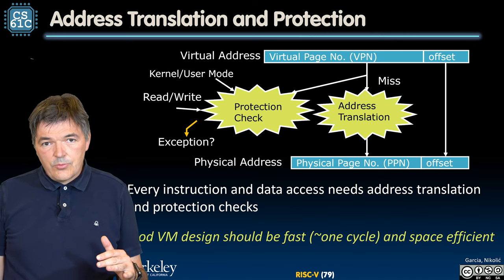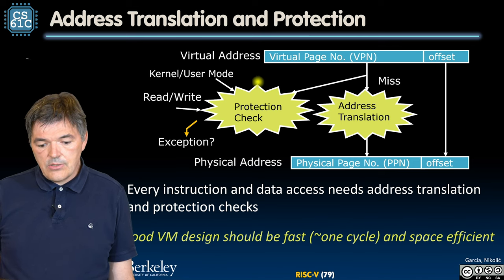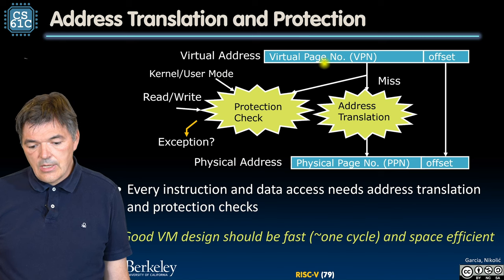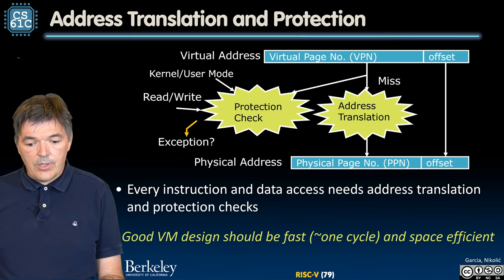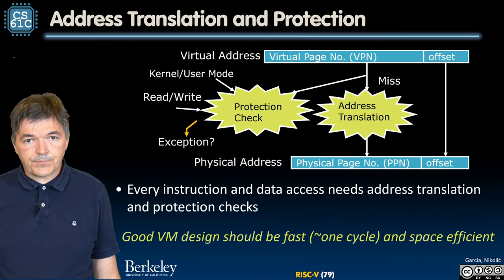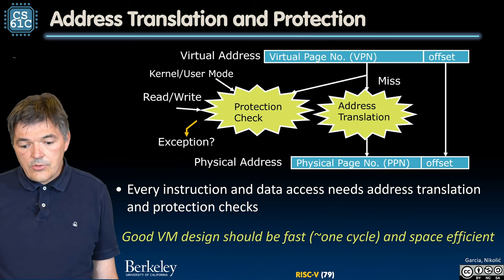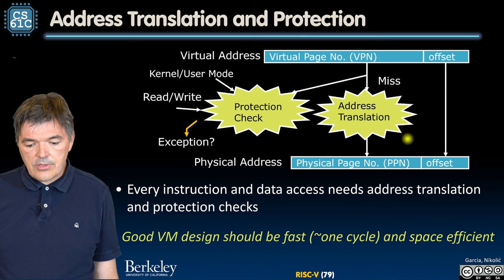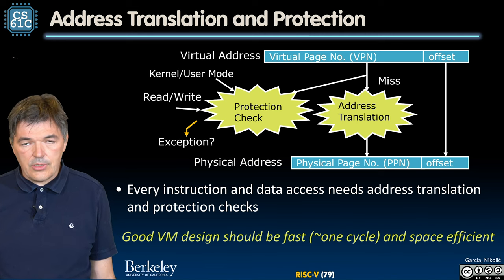First, let's recap what we would like to do. Our processor or process uses virtual addresses that consist of a virtual page number (VPN) and the offset. If you're working with four Kibi pages, the offset will be 12 bits. The virtual page number is the remaining 20 bits in a 32-bit system. When we would like to access a new page, we need to go through the address translation to obtain a physical page number (PPN), and we would append it to our offset to get the actual memory location that we would like to work with.